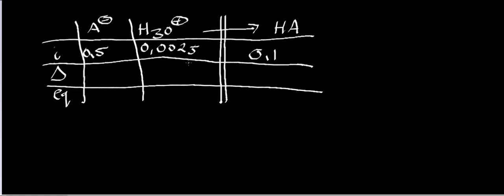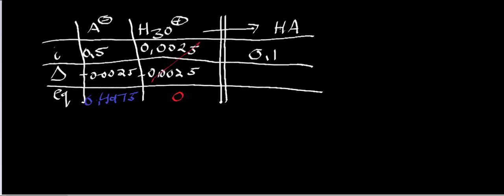The lactate is going to deprotonate hydronium. If lactate deprotonates hydronium, the lactate gets converted to lactic acid. So you're losing that amount of hydronium, and you're also losing that quantity of lactate — minus 0.0025. The equilibrium concentration of hydronium cancels out to zero. The equilibrium concentration of lactate is 0.4975 moles. And since we're losing that amount of lactate, we gain it on the other side — 0.0025 — so our equilibrium concentration of lactic acid is 0.1025 moles.